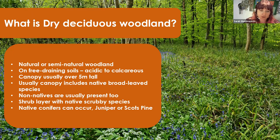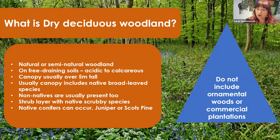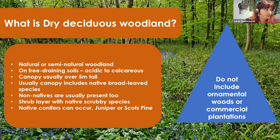You can also get native and non-native conifers throughout some dry deciduous woodlands — juniper or Scots pine if you're towards Scotland, or larch and Corsican pine mixed in. What we're not including in this category are ornamental woods or commercial plantations — the coniferous plantations all in nice rows being farmed as a tree species, or ornamental woods in the grounds of a country house with a real mishmash of non-natives.